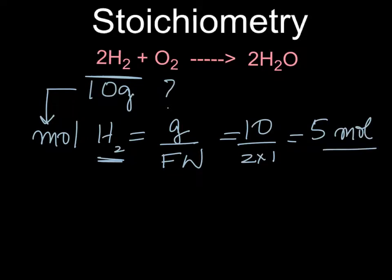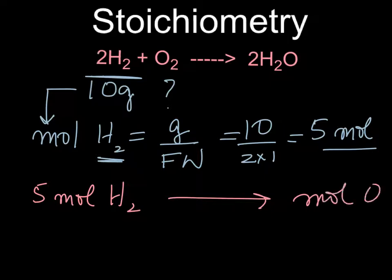So we write 5 moles of H2, and then we find out how many moles of O2 do we need. And why O2? Well, because we've been asked how many grams of O2, so you find how many moles of O2 do we need. Now, again, we just simply multiply it by a conversion factor that will give us moles of O2. So, we have O2 here, we write O2 here. We have H2 on this side, we put H2 here.